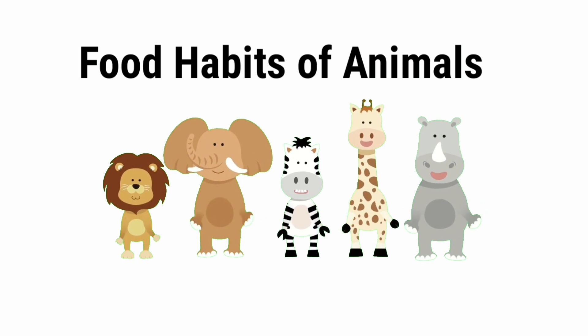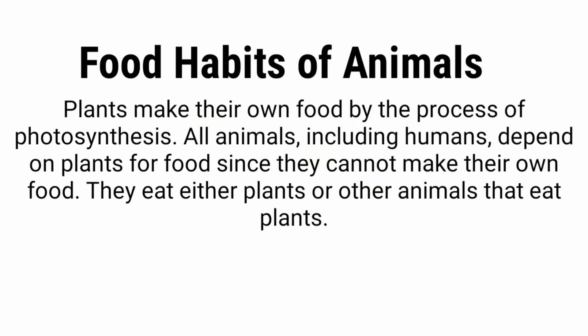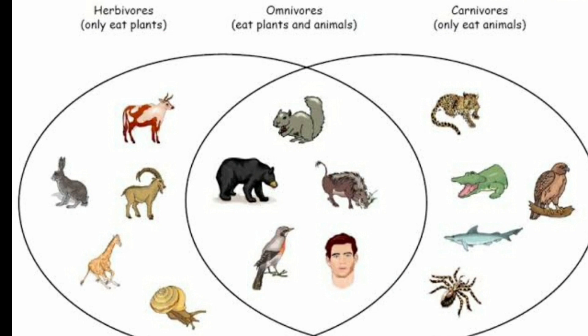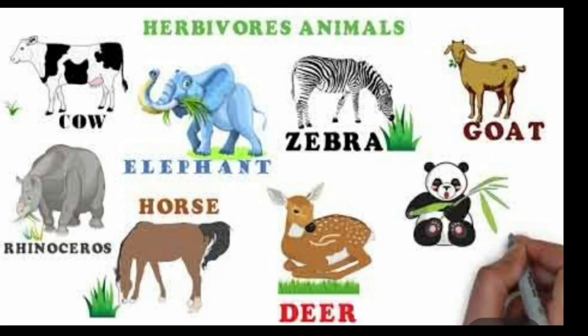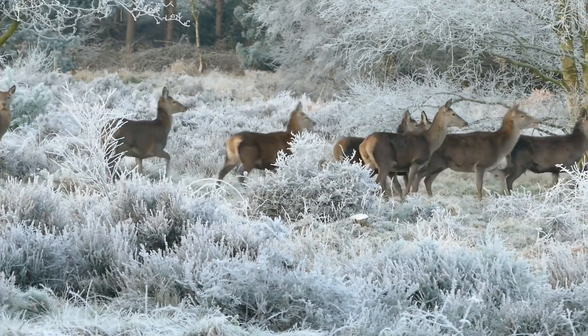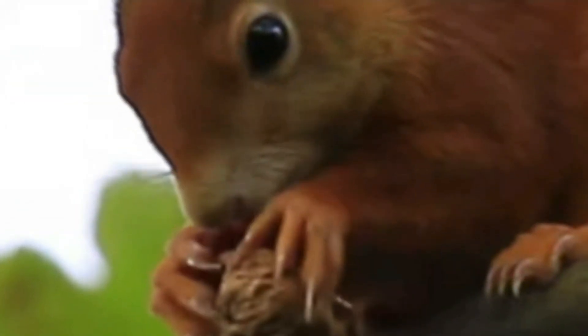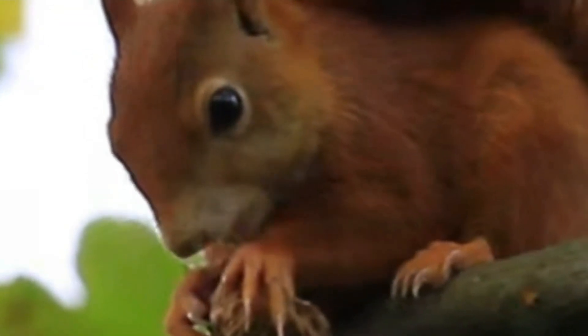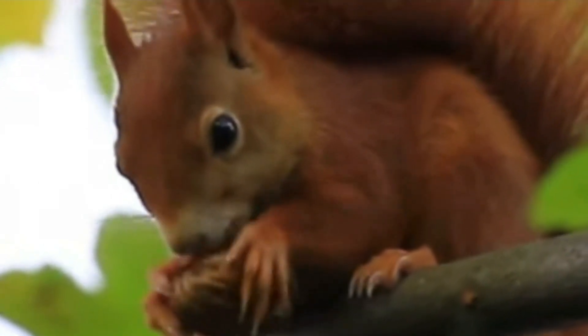Now the food habits of animals. Plants make their own food by the process of photosynthesis. All animals, including humans, depend on plants for their food as they cannot make their own food. They eat either plants or other animals that eat plants. Animals can be herbivores that eat only plants, omnivores that eat plants and animals, and carnivores that eat only other animals. Their mouth parts are adapted to the kind of food they eat. Animals like deer, horse, elephant and giraffe that eat only plants are known as herbivores. Herbivores like squirrels and rabbits have sharp cutting teeth at the front of their mouth to eat seeds and nuts, while herbivores like cows and buffalos have flat and blunt molars at the back to chew and grind the grass they eat.